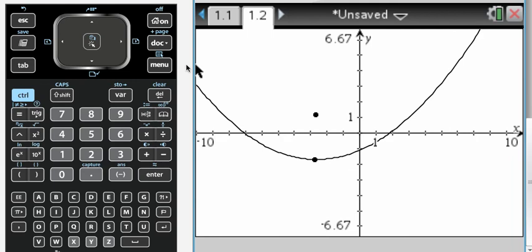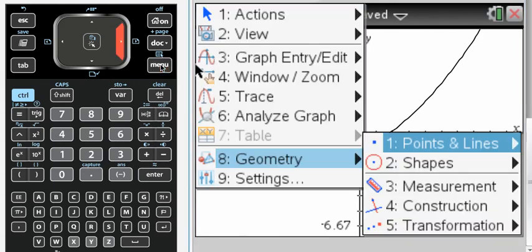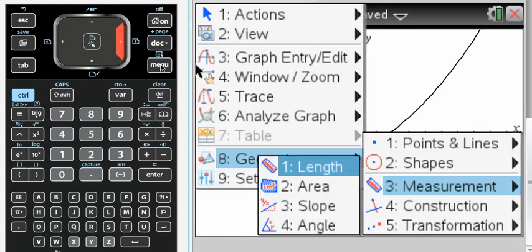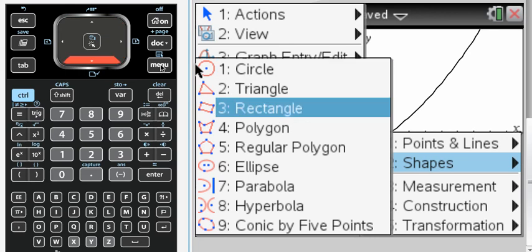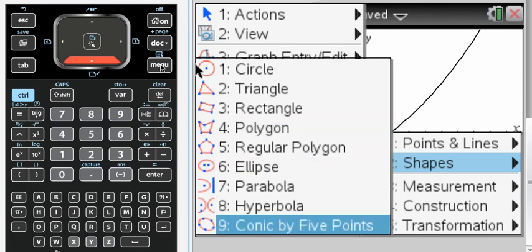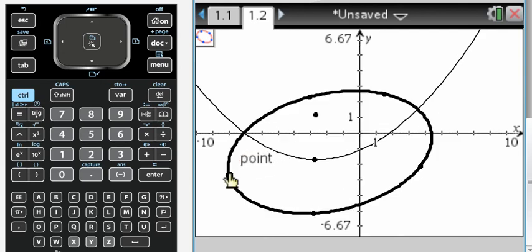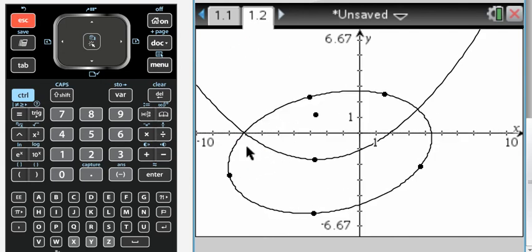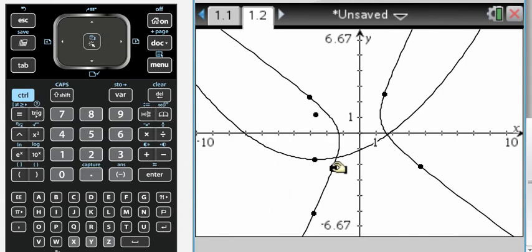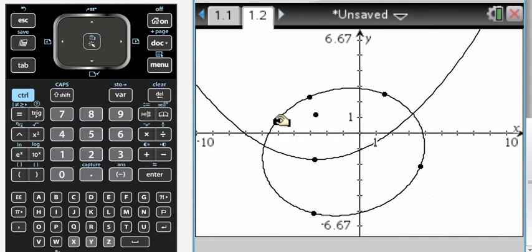You can probably tell that I don't mess around with geometry that much, which is why I was kind of fumbling with some things along the way here. But they're on your calculator so you should know how to use them. And you can make a conic through five points and then drag those points around and see what happens.